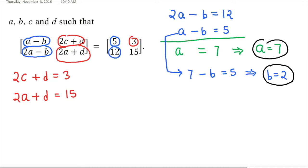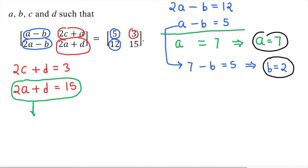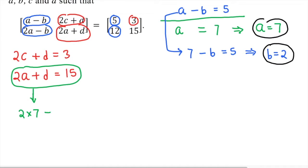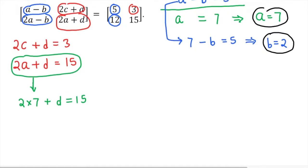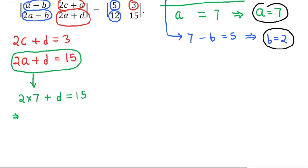We have found the value of A, so take the equation 2A plus D is equal to 15. The value of A is 7, so 2 into 7 plus D equals 15. We get 14 plus D equals 15, so D is equal to 1.